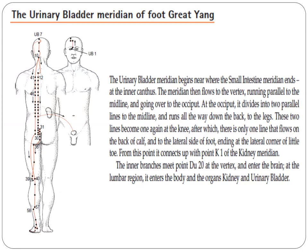The inner branches meet at the vertex and enter the brain. At the lumbar region, it enters the body and the organs — kidney and urinary bladder.